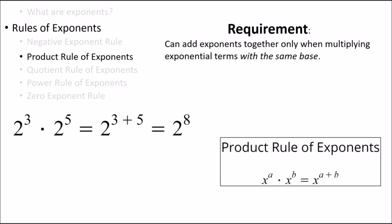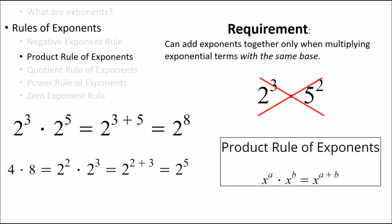Could we use the product rule of exponents here? The answer is no — the two exponential terms have different bases, so we can't just add together their exponents. Let's try another example. Could we use the product rule of exponents here? The answer is actually yes. With a clever math trick, we can rewrite this expression so that both exponential terms have a base of 2. We know that 4 is the same as 2 squared and 8 is the same as 2 cubed, so we could rewrite both exponential terms with the base of 2 and then add the exponents together to get 2 to the power of 5.